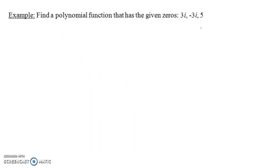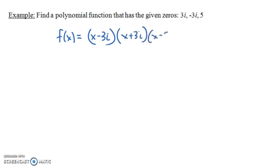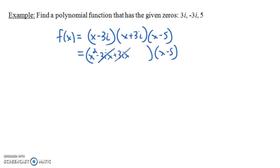Let's do one more — this one involves imaginary numbers. We want to find a polynomial with zeros 3i, -3i, and 5. So (x - 3i) is a factor, (x + 3i) is a factor, and (x - 5) is a factor. Multiplying the first two: x² is there, the ±3ix terms cancel, and -3i times +3i gives -9i².